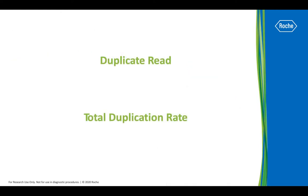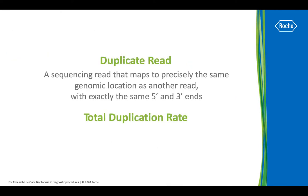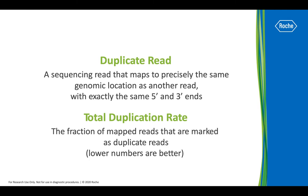A duplicate read is a sequencing read that maps to precisely the same genomic location as another read, with exactly the same 5' and 3' ends. The duplication rate is defined as the fraction of mapped sequencing reads that are marked as duplicates.